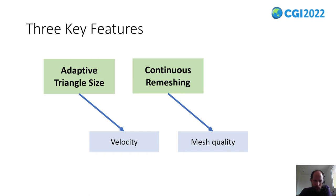The second key feature is continuous remeshing. We apply continuous updates to the triangulation and add and remove vertices to keep a good mesh quality.